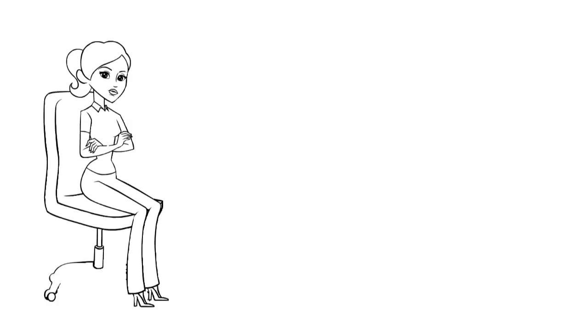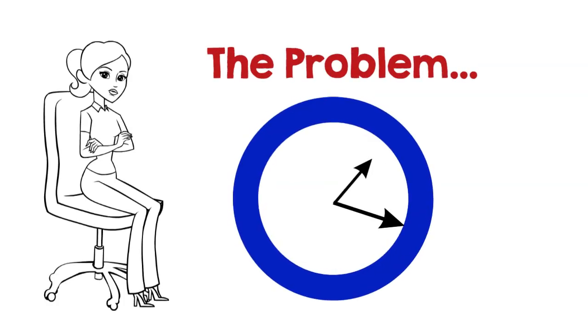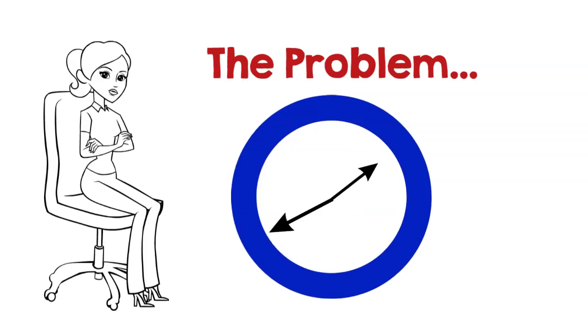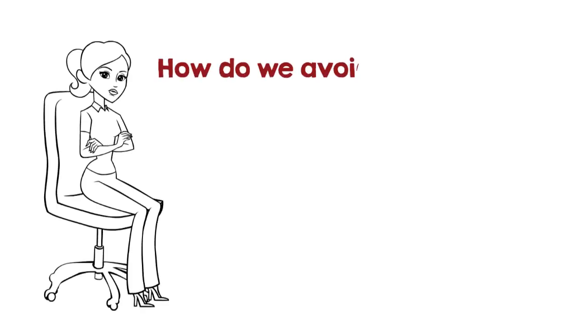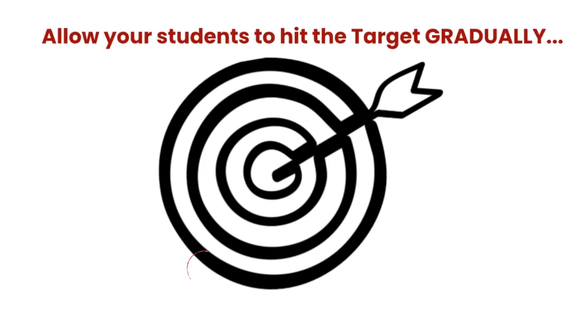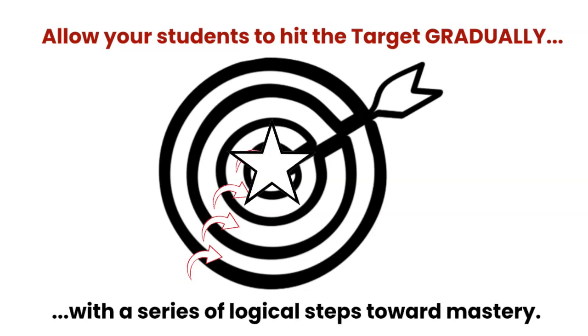Here's the problem. Some of these strategies can be very time-consuming and diverge from the original content standard. You can spend hours planning and grading activities that just don't support targeted student growth. So how do you help your students hit the target gradually with a series of logical steps toward mastery?